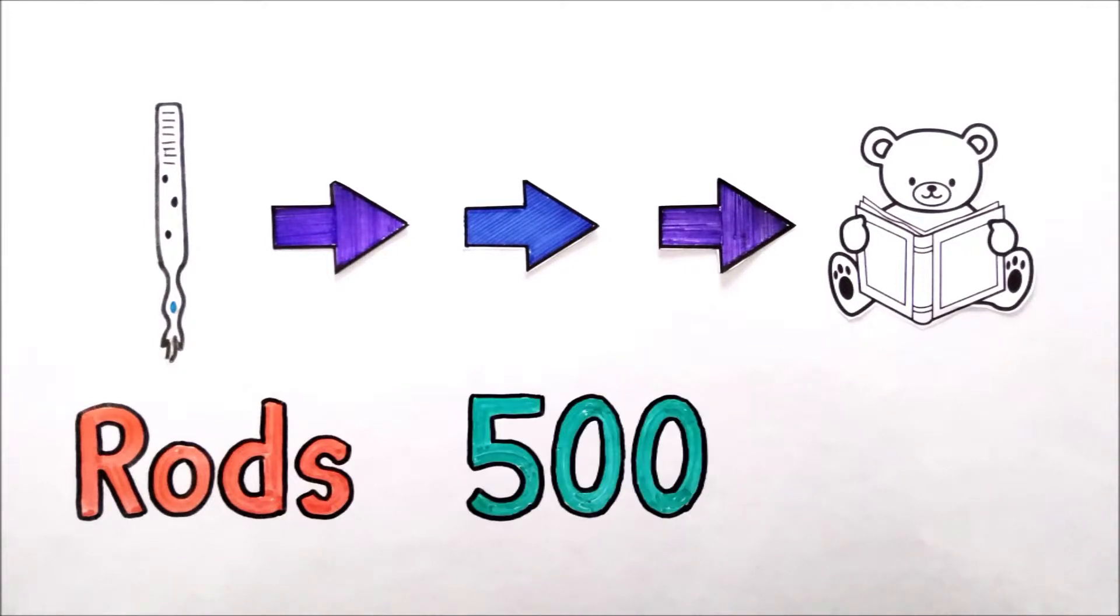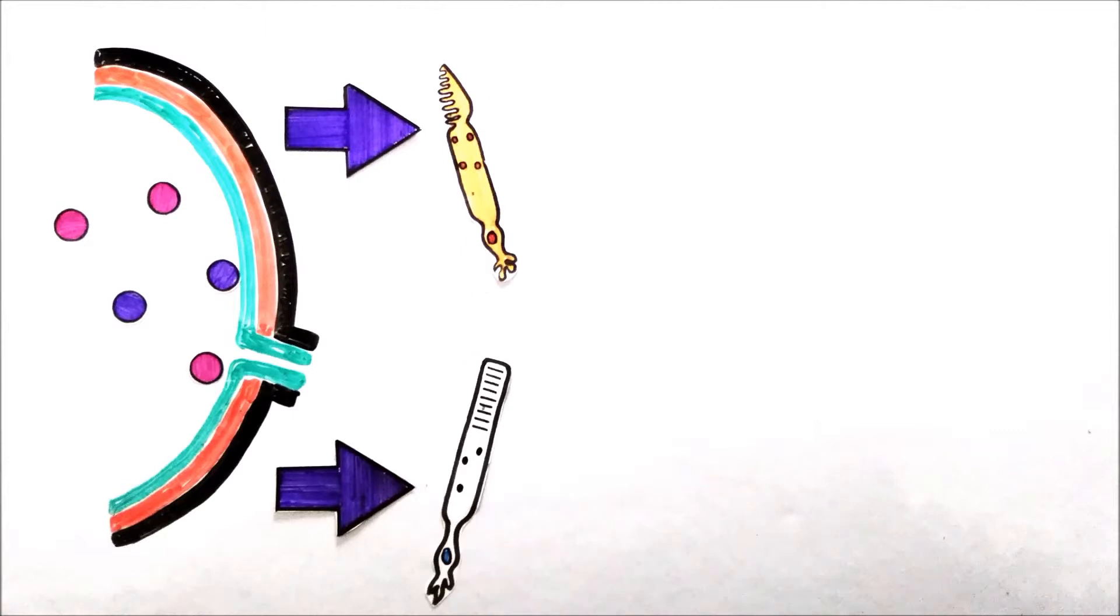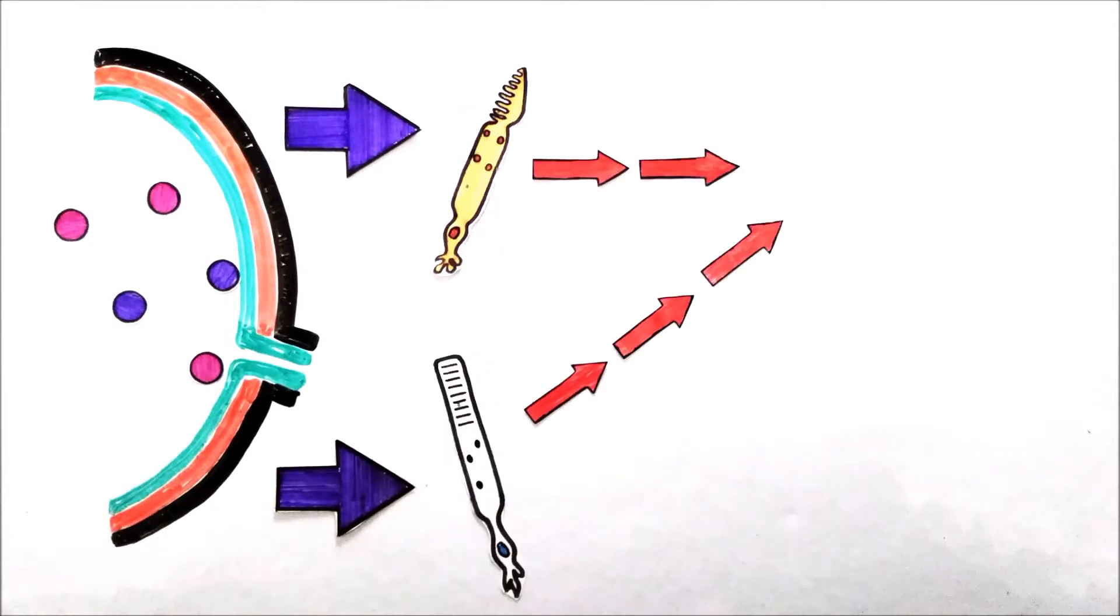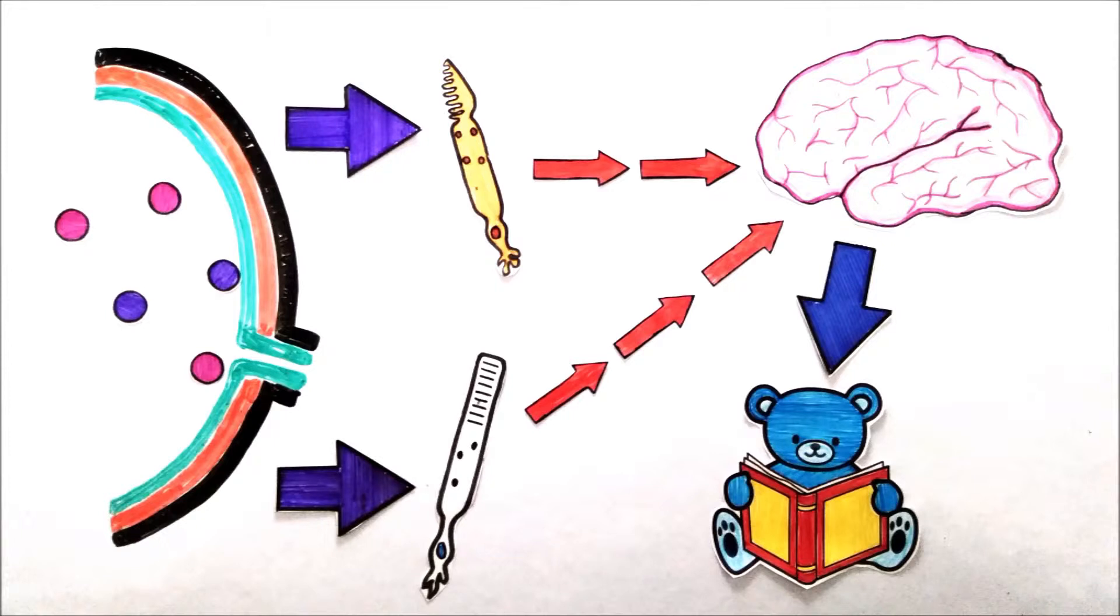Rods are nearly 500 times more sensitive to light than cones. Thus, they become active even in the presence of low amount of photons. When the photons hit retina, they stimulate these receptors. These receptors then send signal to brain via nerve cells and our brain constructs the picture of the object. This is how you see things.